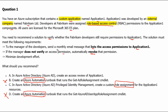A custom role assignment cannot send a monthly email message, list access permissions to Application 1, or automatically revoke permissions. Therefore, this is not the correct answer.